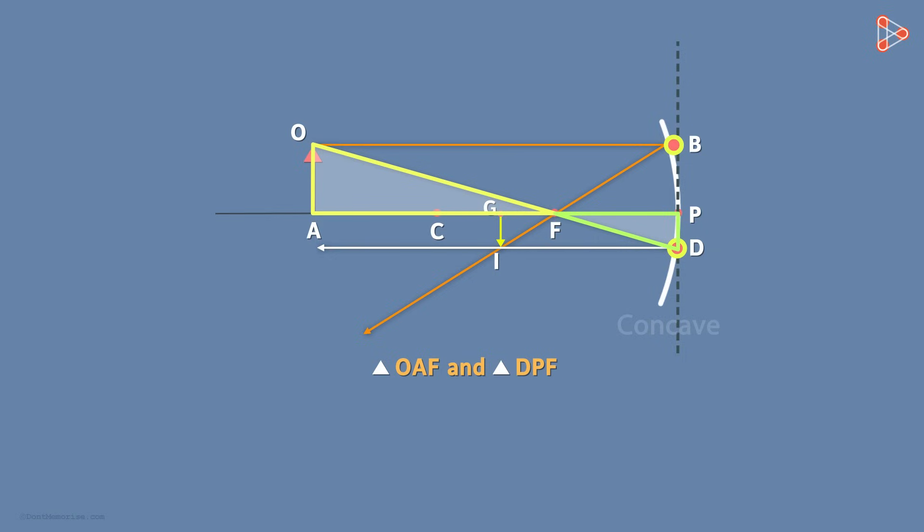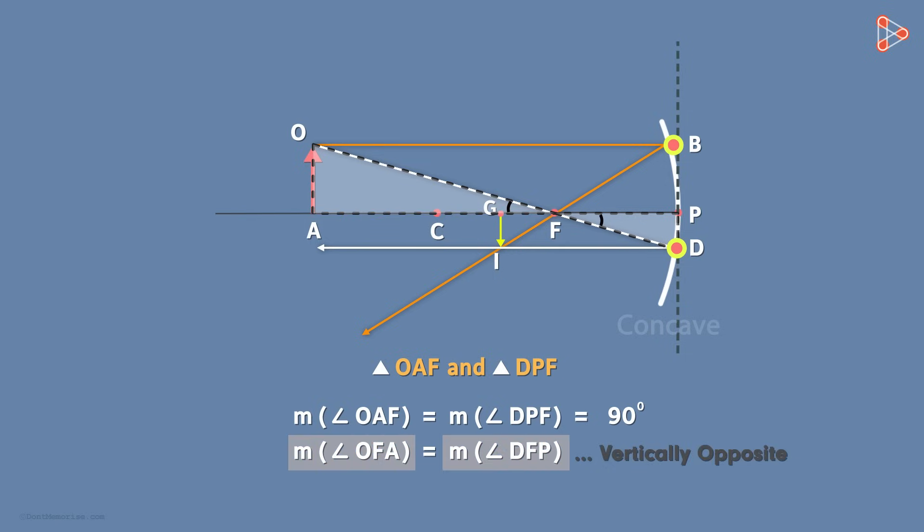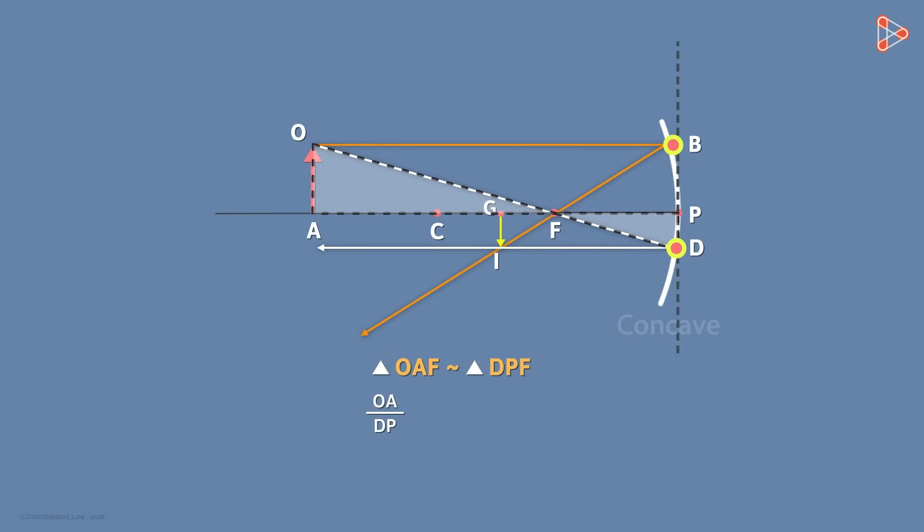Now consider these two triangles. Are these two triangles similar? Let me first just draw them separately here. We see that angle OAF is equal to angle DPF. Why? They both measure 90 degrees. What about these two angles? Angle OFA and angle DFB? When two lines intersect, the vertically opposite angles are always equal. Hence, these two angles are equal too. What about the remaining angles? How do we show that they are also equal? With very basic logic, we know that if the two sets of corresponding angles are equal, then the third set has to be equal. Finally, we proved that triangles OAF and DPF are similar by the AAA test of similarity. Now because they are similar, we can say that OA over DP is equal to AF over PF is equal to OF over DF. We are not really interested in this ratio, so we will just remove it from here.